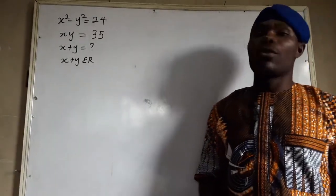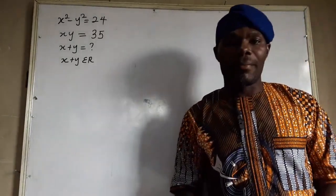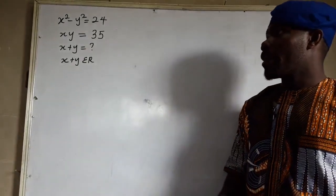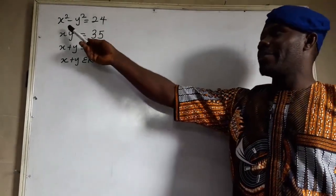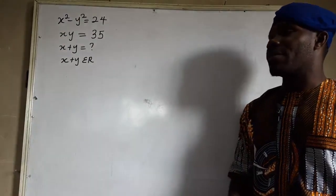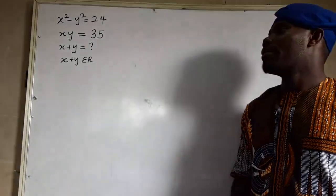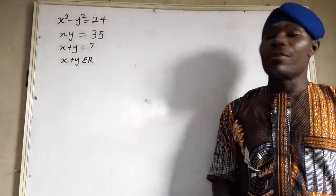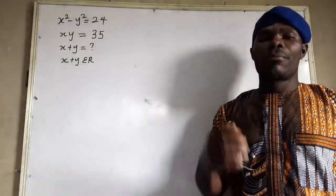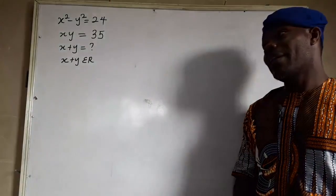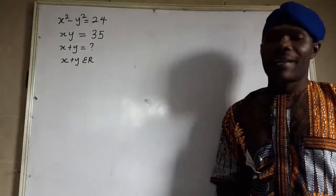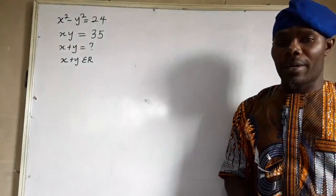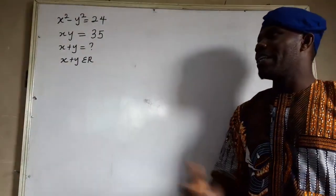Today's question is Olympic mathematics. The question is: x squared minus y squared equals 24, and xy equals 35. We have to find the value of x plus y. The question tells us that x plus y is a real number.